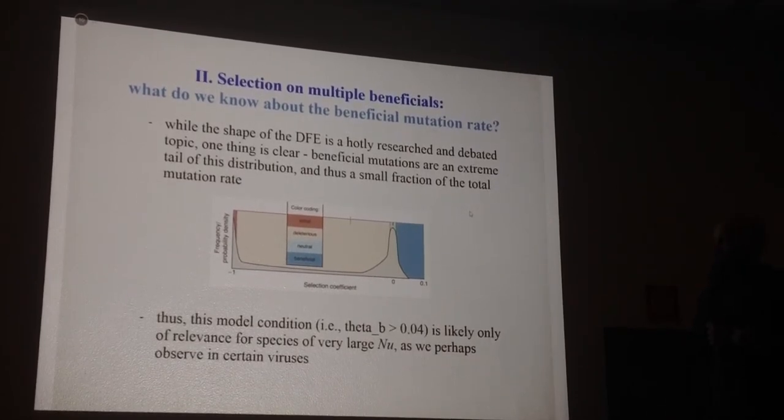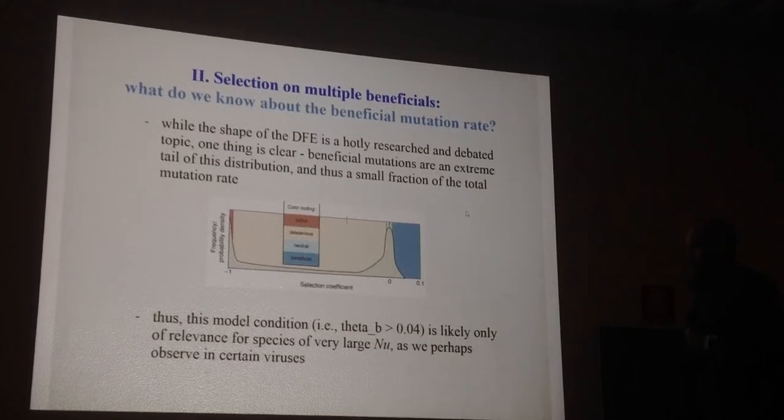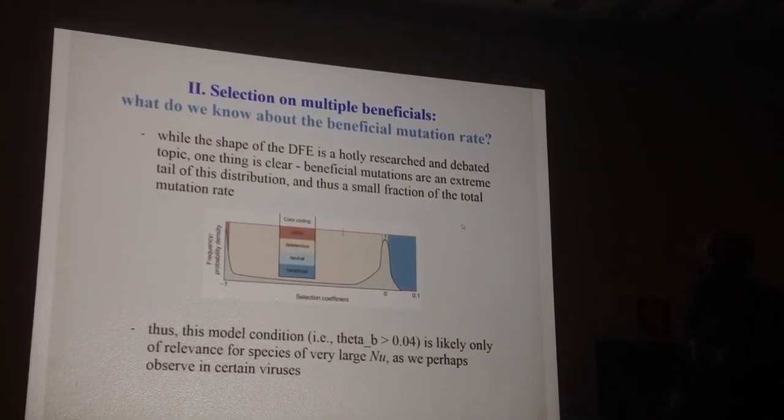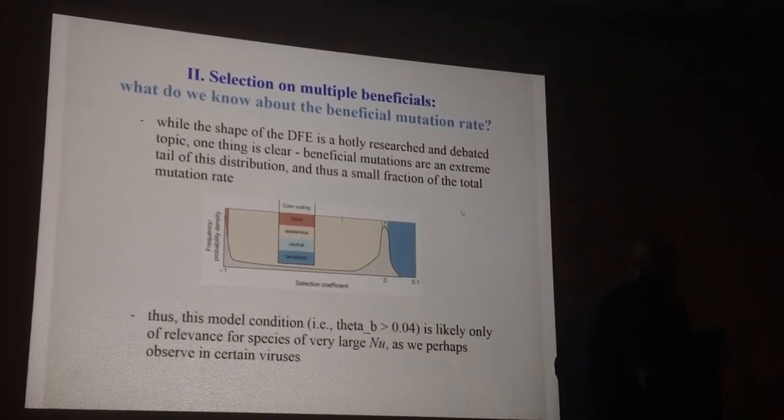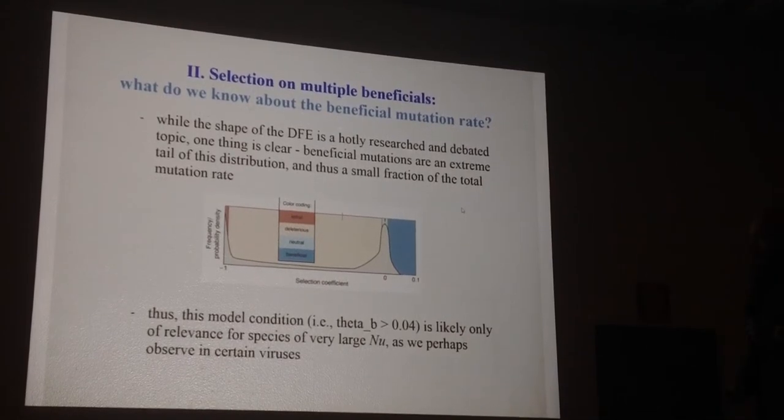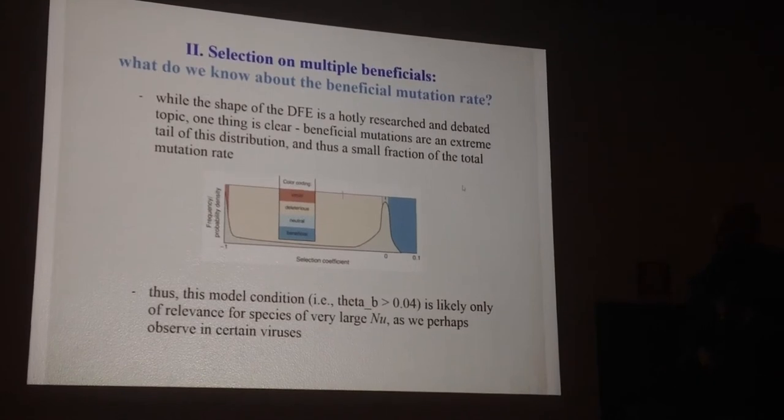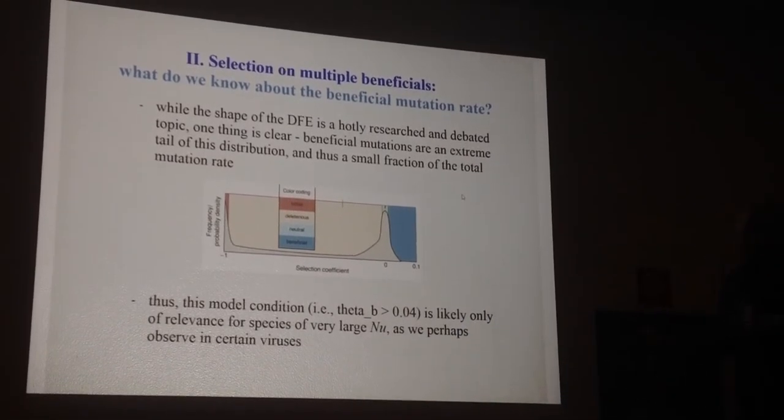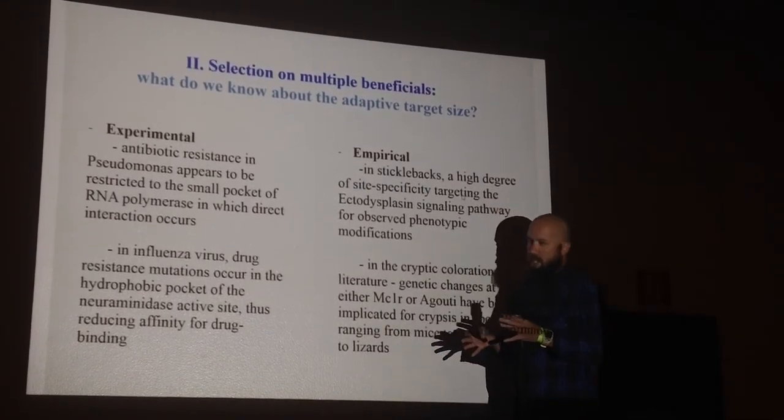We know something about the beneficial mutation rate, I would say. This is just a cartoon representation of a distribution of fitness effects, which a lot of people in this room, including us, have thought a lot about over the years, where you have a lot of deleterious things, strongly deleterious things, and a lot of things around wild-type fitness, around neutrality. What I think is fair to say—I'm not going out on a limb saying this—is that the beneficial mutation rate in this tail is probably some small fraction of the overall mutation rate. Whatever you think it is, whatever shape you think this tail distribution takes, I think it's fair to say that it's small compared to the overall mutation rate. We know from Pennings and Hermisson that this theta B, that is theta to the beneficial, needs to be greater than 0.04. If you start thinking about that, that's a pretty big number in most species we think about. Perhaps it's relevant in certain viruses. Pennings has a nice example from HIV, for example. It looks fairly promising.